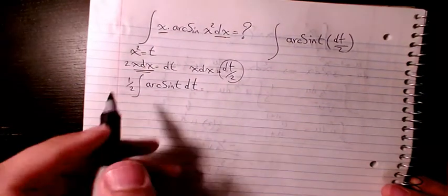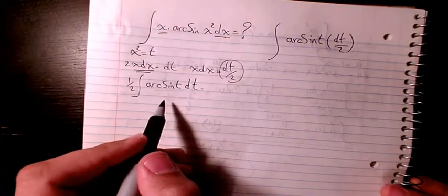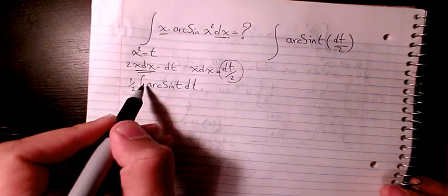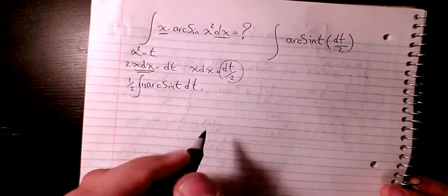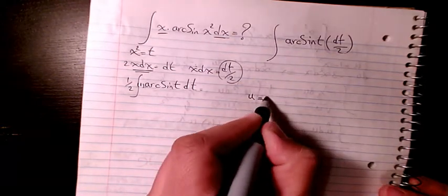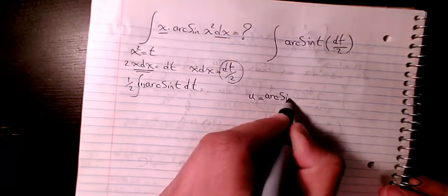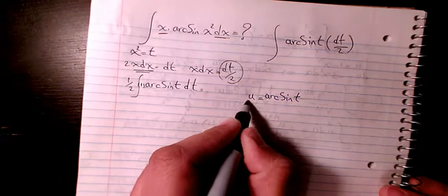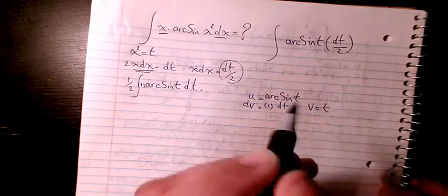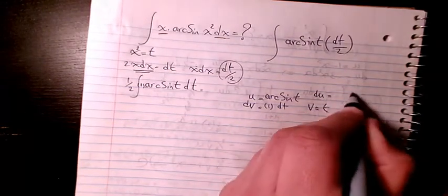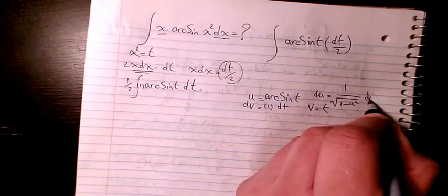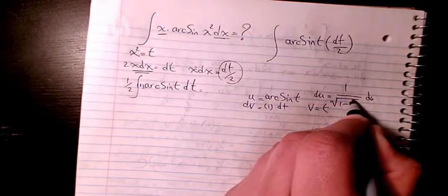Now I want to use integration by parts. I use here 1 times arcsin(t) dt, so I'm going to consider u as arcsin(t) and dv is going to be 1 times dt. So v will be t and du will be 1 over square root of 1 minus t² dt.